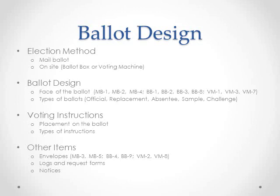Each ballot type may have slightly different instructions. For example, if you're holding an on-site ballot box election, the official ballot used the day of the election will contain different instructions from the absentee version, because the absentee version will need to be returned by mail to the election committee by the deadline for the count. In addition to the ballots and instructions, you'll need to create various types of envelopes depending on the type of election you're holding, as well as logs and request forms for alternative ballot types such as replacement ballots or absentee ballots, and for on-site elections a supply of challenge ballots and envelopes. Finally, you will need to draft and post notices to the membership about the election, which must be posted at least five days before the election takes place. See MB-6, BB-5, and VM-4. There are checklists in your materials for each type of election, as well as samples of every document.